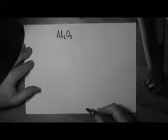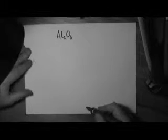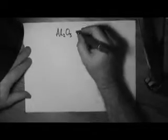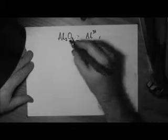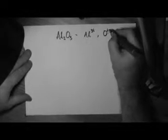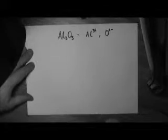This is also done in the extraction of aluminium that we might cover later depending on time. First of all we've got to identify what ions are in the ionic compound. Aluminium is Al3+ and oxygen is O2-. They're the ions in aluminium oxide.